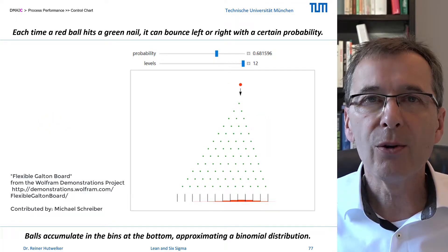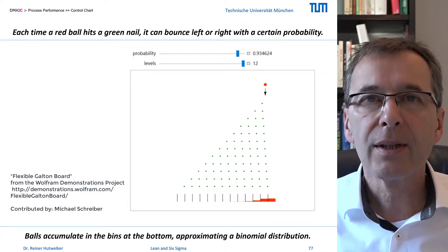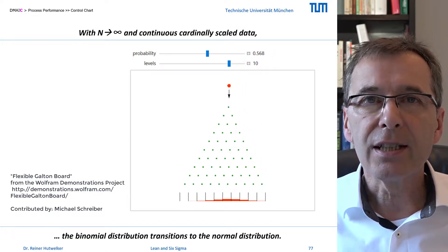In a controlled process, only random influences, i.e. common causes, occur. These random influences lead to normally distributed data of the output if the data were measured on a cardinal scale.